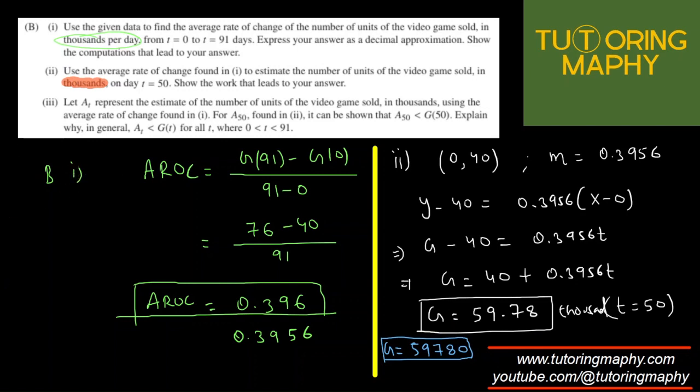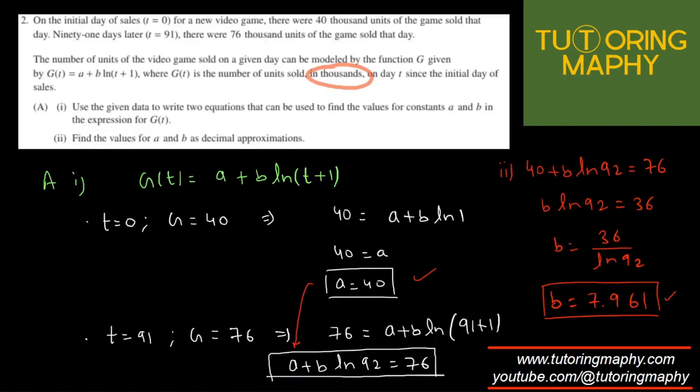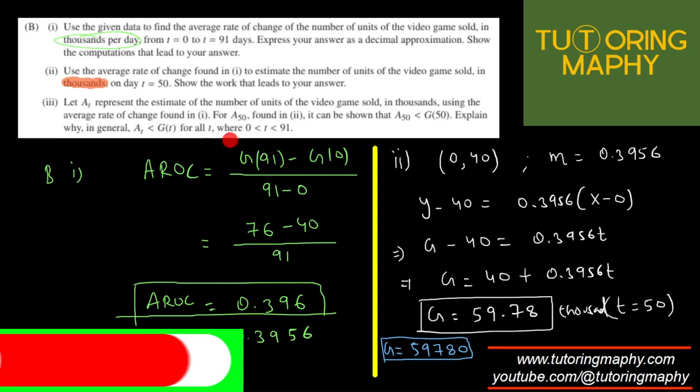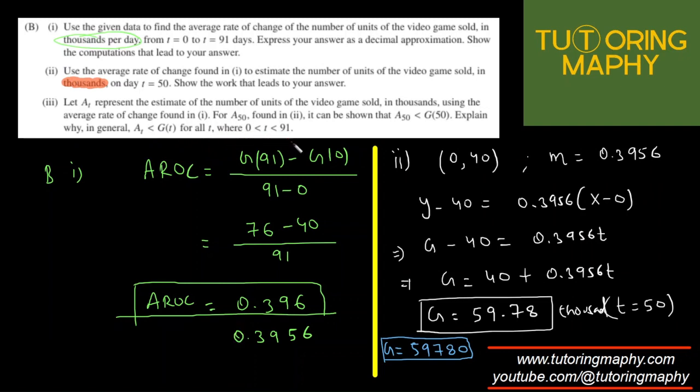Let's try the next one. Let A(T) represents the estimate of the number of units of the video game sold in thousands using the AROC found in one. Which is obviously this equation, this equation over here. For A50 found in two, it can be shown that A50 is less than G50. And G is over here, right? This is the G function. So explain why, in general, A is less than G for all T, where T is between 0 and 91. So there are a couple of ways to answer. There are at least two ways to answer this question. Both are related. For both, you have to use your TI-84.